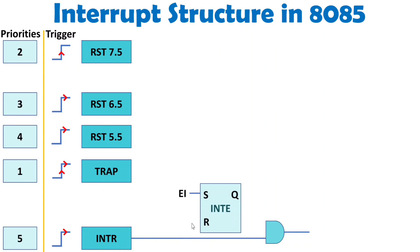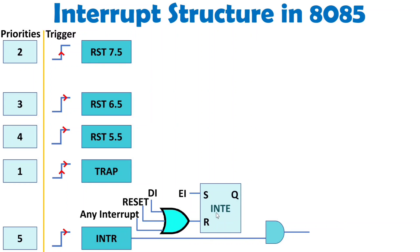The reset terminal is connected with an OR gate with many conditions. If DI (disable interrupt) is active, you will have a reset condition of the INTE flag, making Q equal to 0. This reset terminal gets reset by disable interrupt, by reset signal, or if any other interrupt is arising. The reason is INTR has least priority — if any interrupt is currently being serviced, INTR cannot be served and the reset goes high.